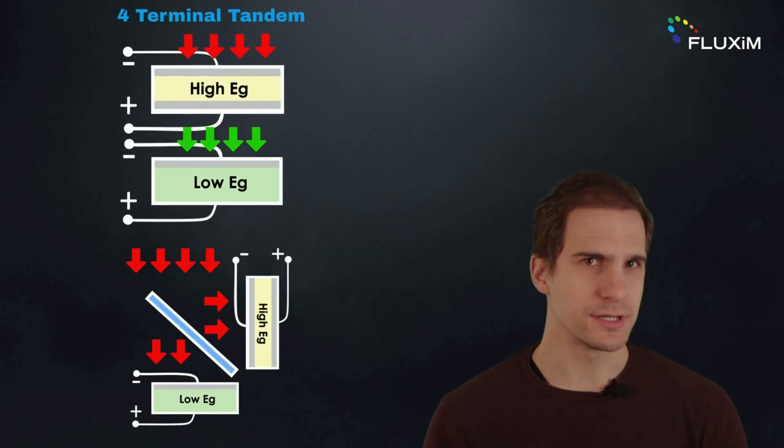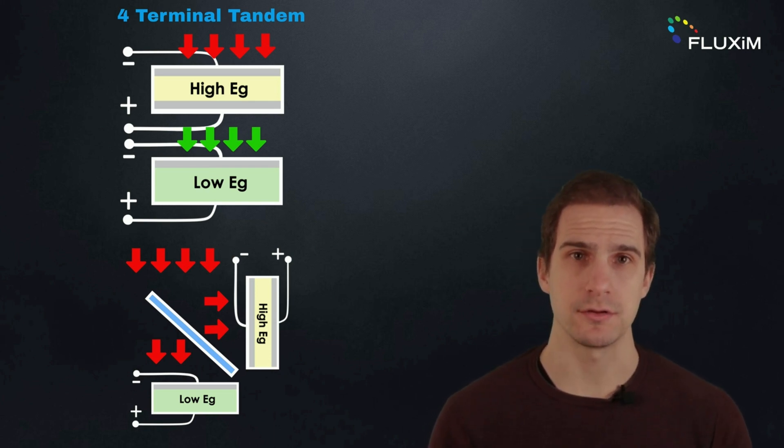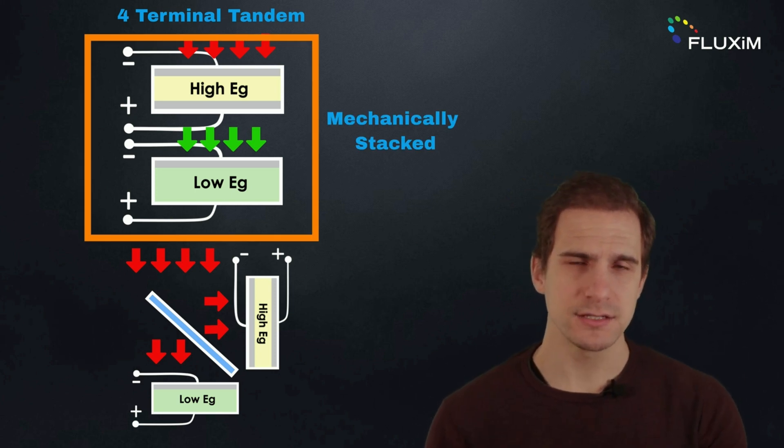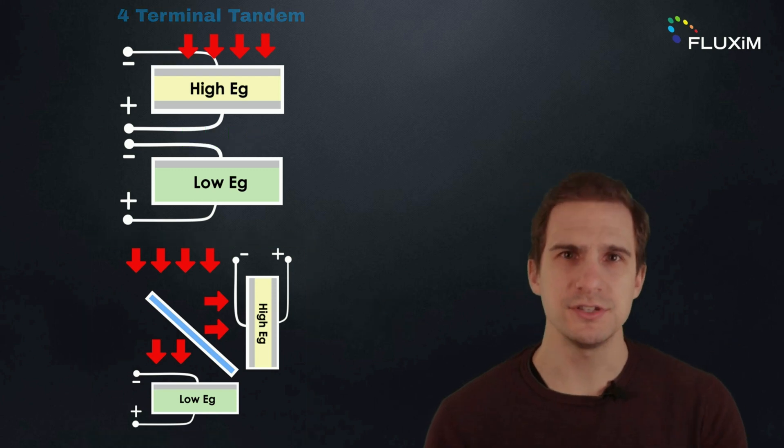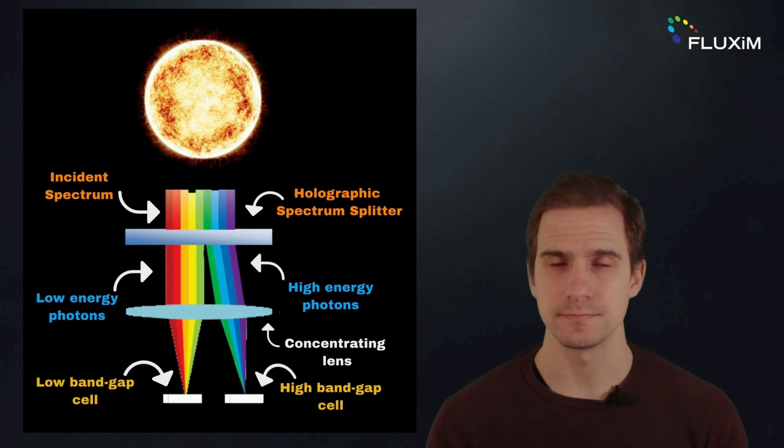In a four-terminal tandem solar cell, the two subcells are fabricated independently and are electrically isolated from each other. The subcells are either mechanically stacked or coupled with a spectral splitter, which is essentially a set of lenses to direct light to the appropriate subcells.